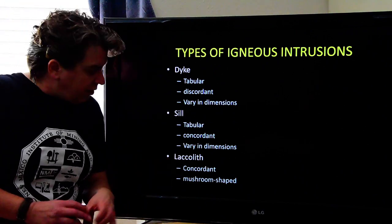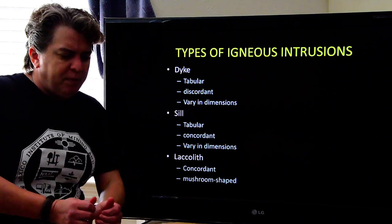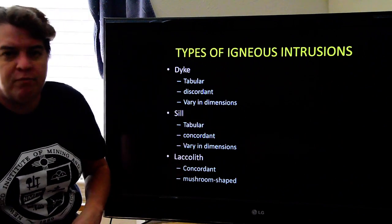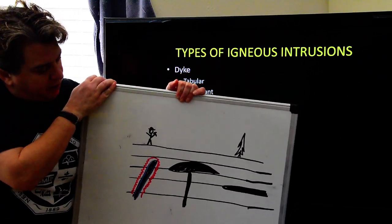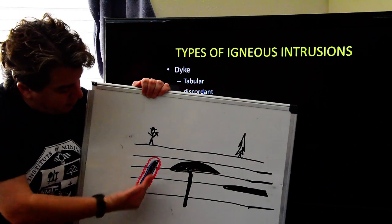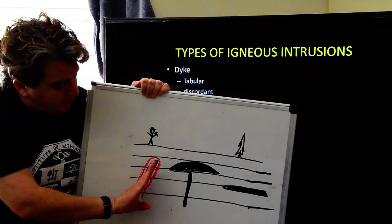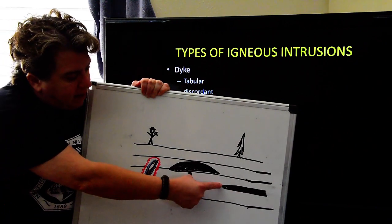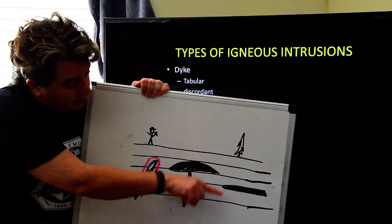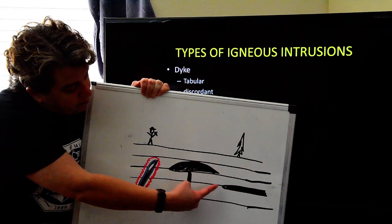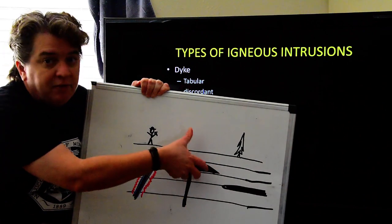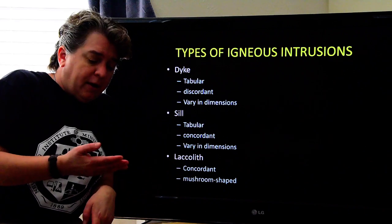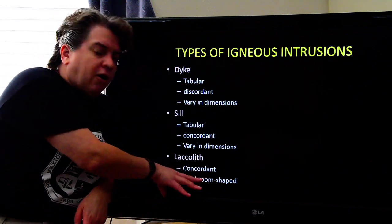A laccolith is also concordant, but it's mushroom-shaped. It pushes itself into the country rock and then inflates upward into a mushroom shape. On my board: here's a dike cutting across, here's a sill running parallel to the layers, and right there is the mushroom-shaped laccolith that rose up and then inflated.